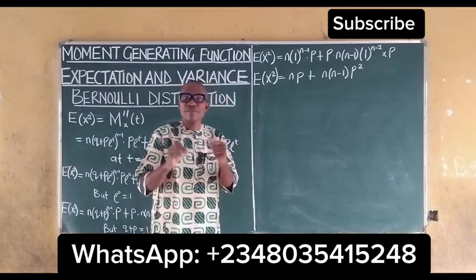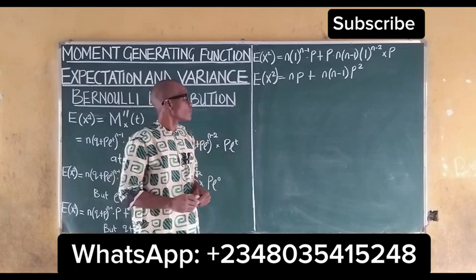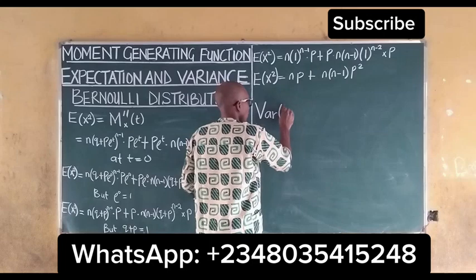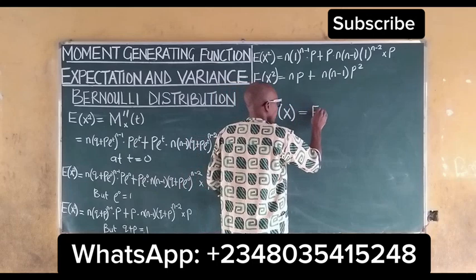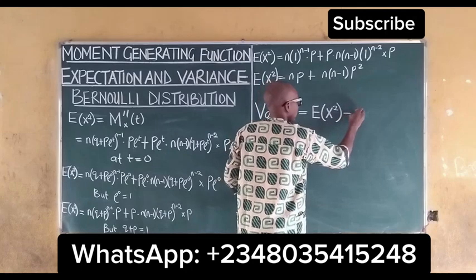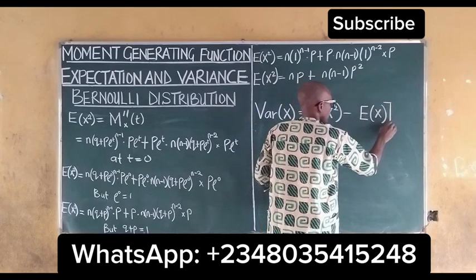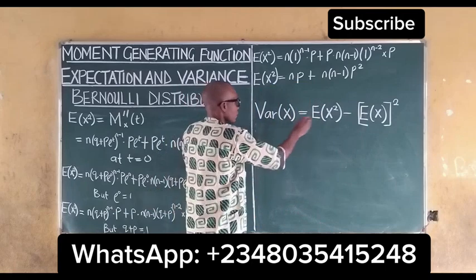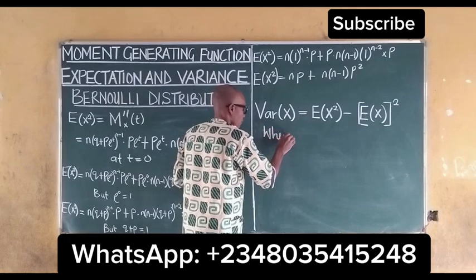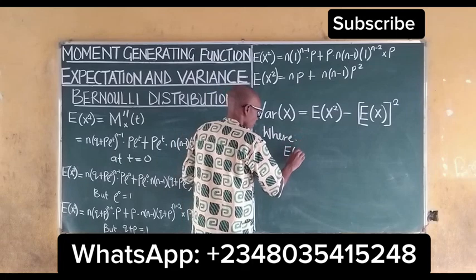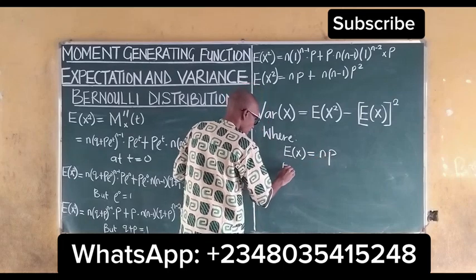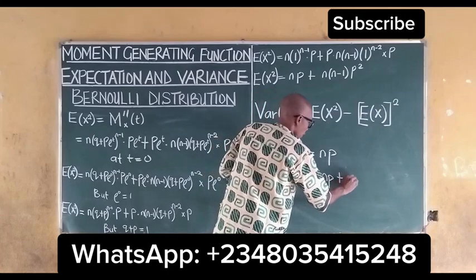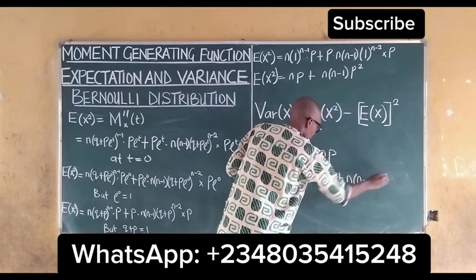The next thing to do is to look for our variance. We recall that the variance of x is equal to the expected value of x squared minus the expected value of x, all squared. We have the expected value of x equal to np, and the expected value of x squared equal to np plus n(n−1)p².